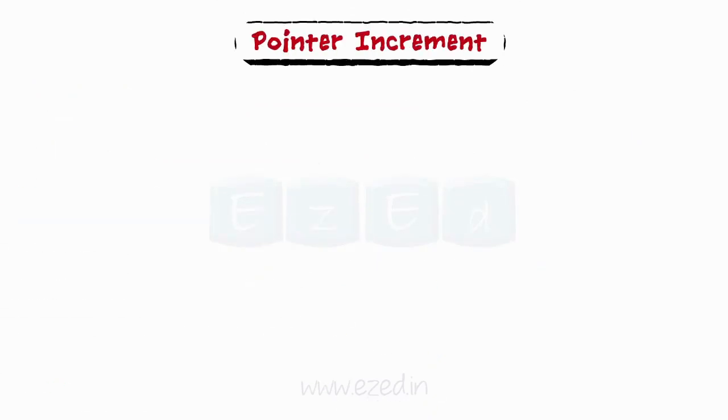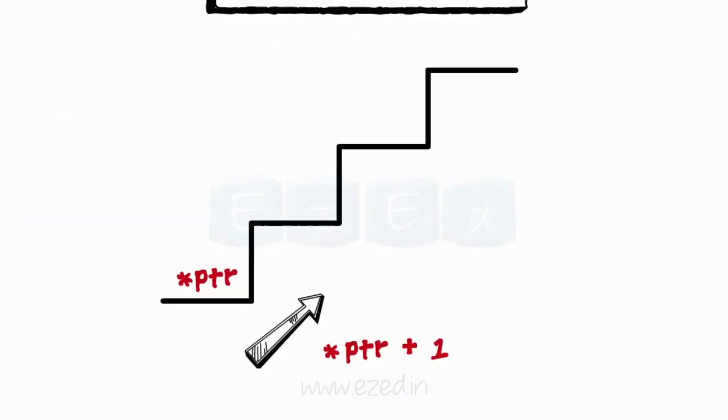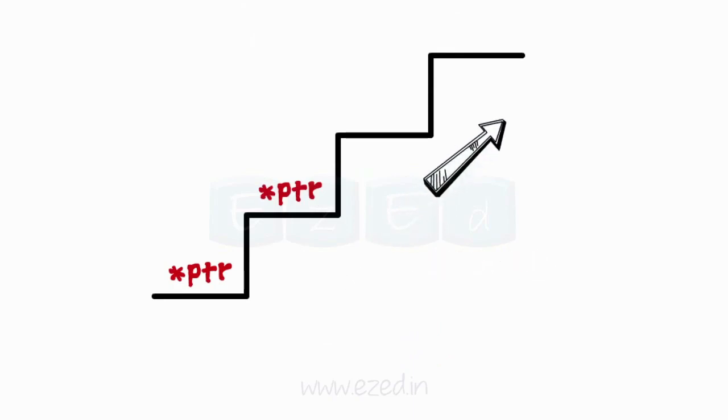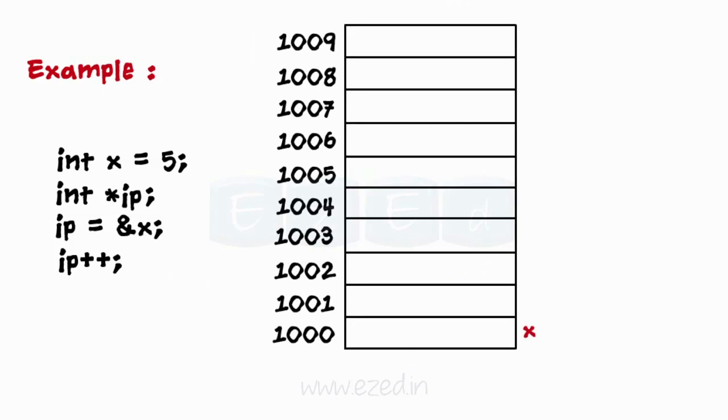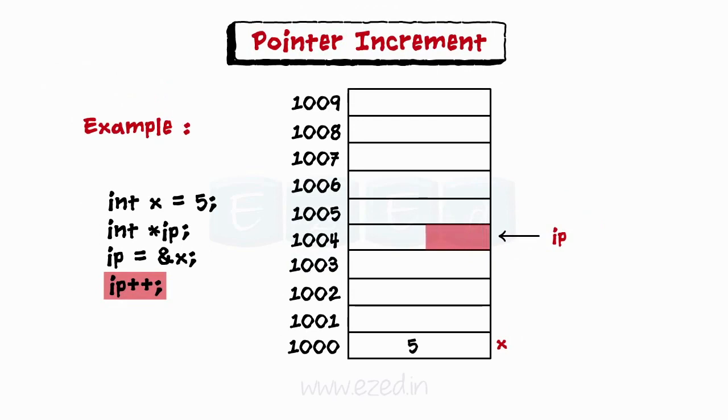Moving on to pointer increments. You actually move the pointer reference by an arithmetic operation. For example, on a typical machine, pointer ip would be pointing to 5 after initialization. On incrementing ip, pointer ip will move to the next 2 bytes, as it is an integer pointer variable.